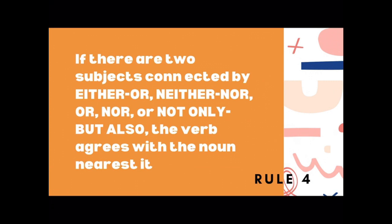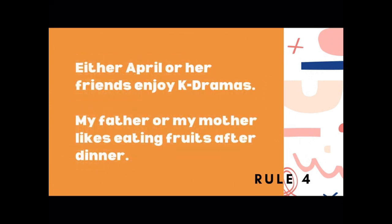If there are two subjects connected by either or, neither nor, or, nor, or not only but also, the verb agrees with the noun nearest it. Let's take a look at some of these examples. For the first one, the noun nearer of the verb is friends. That is why both of them are plural. My mother follows a singular verb because both of them are singular.